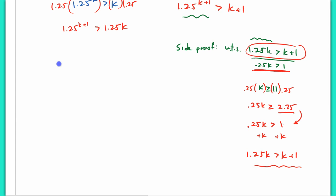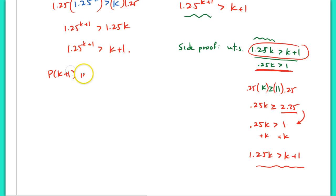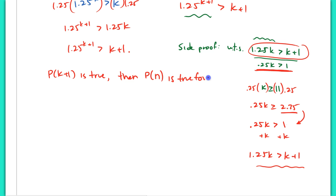Because P(k+1) is true, then for all natural numbers greater than or equal to 11, P(n) is true. So P(n) is true for all n greater than or equal to 11.